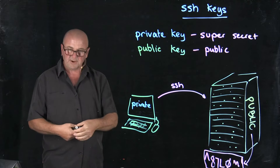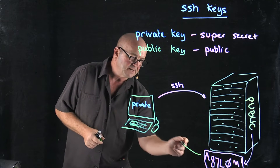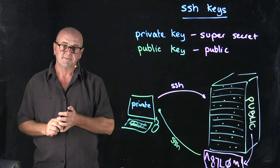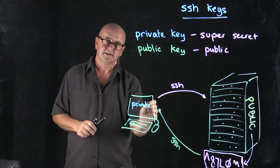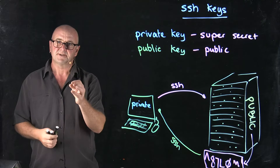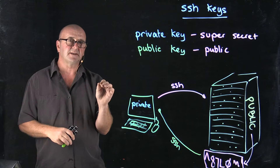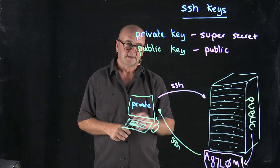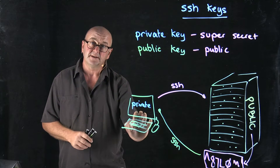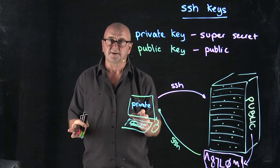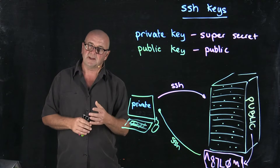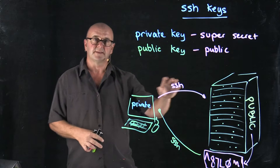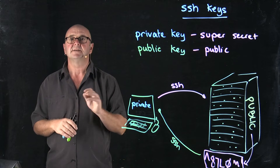The server says: you want to access me using this key — here's the random string, decrypt it and prove you've decrypted it. Your laptop takes that string, decrypts it, and does a calculation on the string that proves it really did decrypt it, then sends that calculation back to the server. If your laptop got the right result, the server says you obviously have the private key and lets you in. If the wrong key was used, the calculation won't be right and the server will say you don't have access.